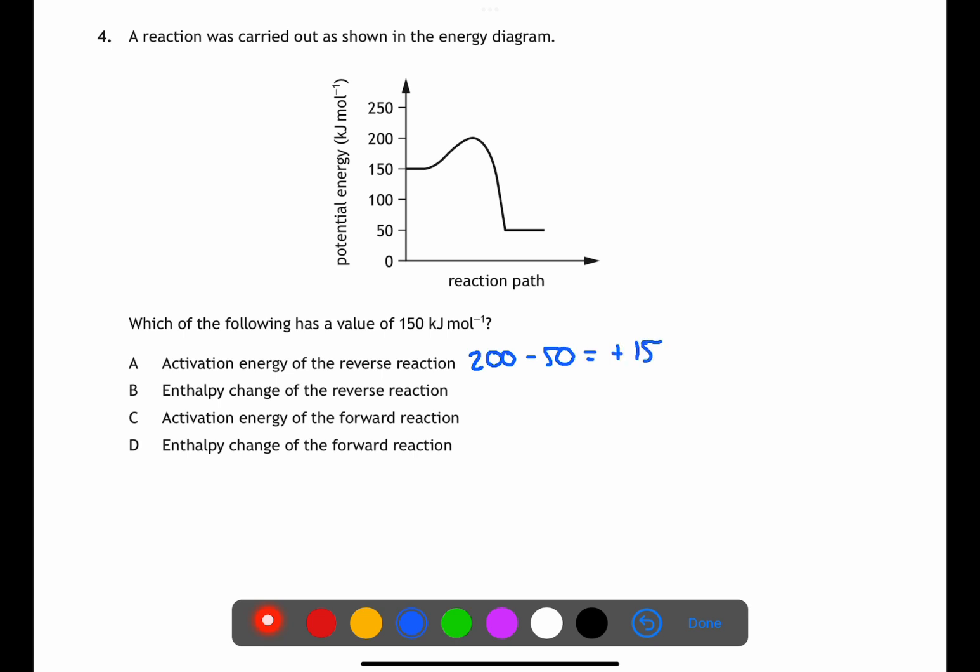For the activation energy of the reverse reaction we're going from the 50 up to the 200 so the activation energy will be plus 150. The enthalpy change of the reverse reaction will be the products of that reaction minus the reactants so that is 150 minus 50 which is plus 100.